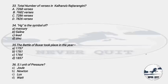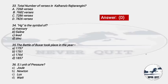Question 32: What is the total number of verses in Kalhana's Raj Tarangini? Options: A) 7268, B) 7682, C) 7286, D) 7826 verses. The right answer is option D — 7826 verses are in Kalhana's Raj Tarangini.